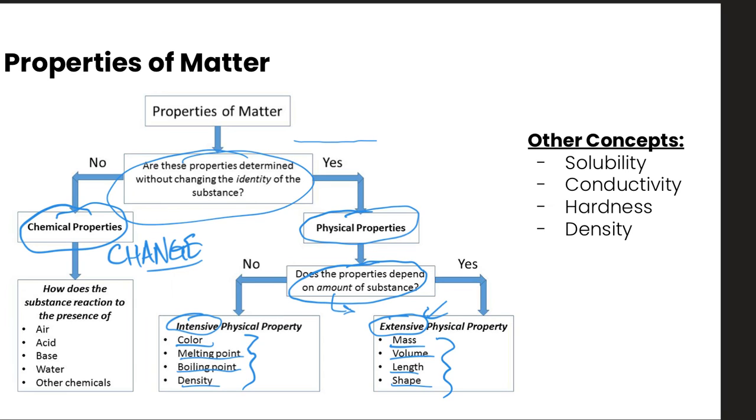Some examples of different types of chemical properties are things like hydrogen. Hydrogen gas has the potential to ignite and explode given the right conditions. So that's a chemical property. Or metals in general will typically react with an acid. For example, zinc reacts with hydrochloric acid and it produces hydrogen gas. So that would be a chemical property.